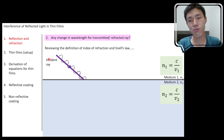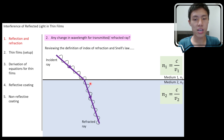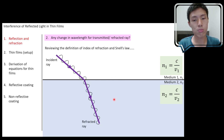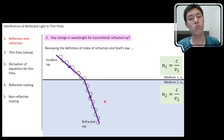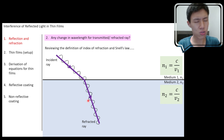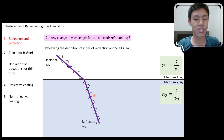When you have an incident ray hitting this boundary, it gets refracted into medium two. We want to see whether there's any change in wavelength for the light traveling in medium two.